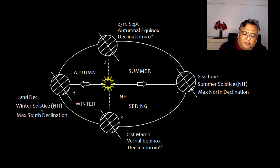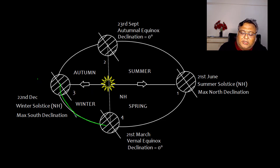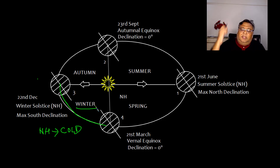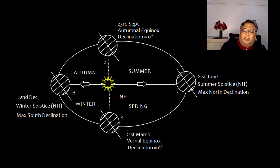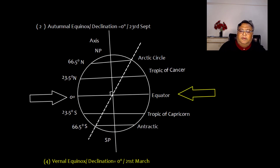From winter solstice, the north end is very much away from the sun and doesn't get much heat, giving a cold winter season. At autumnal equinox and vernal equinox, the sun's rays fall exactly at the equator since the declination is 0.